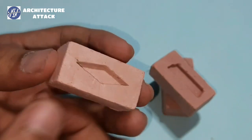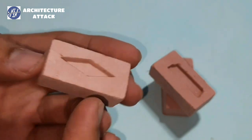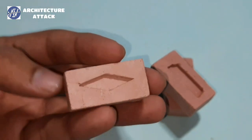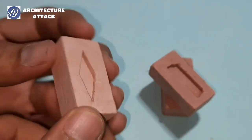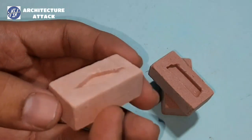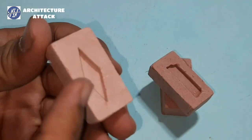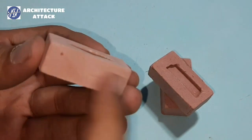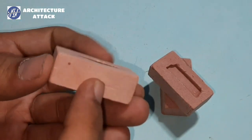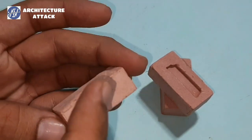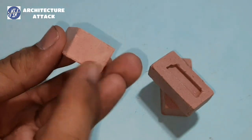Before moving further, let me explain some brick terminologies. After knowing this, you'll understand the brick bonds better. This is a brick. This face of brick is called stretcher or stretcher face - this and this face and this face.